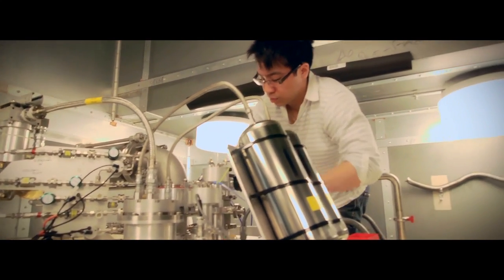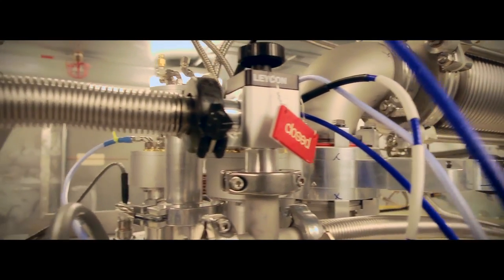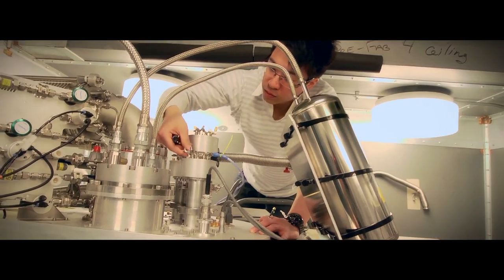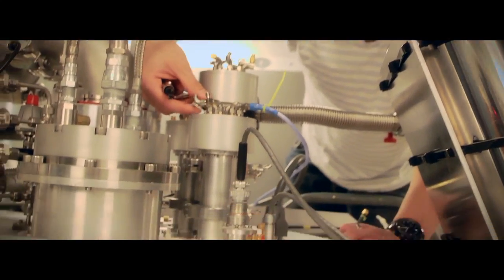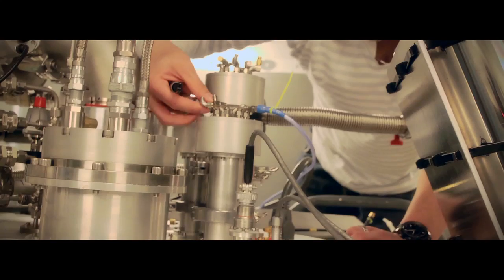The tool that we work these experiments in is a dilution refrigerator, and it gets down to 15 to 20 millikelvin. It gets that cold because we need to be able to keep the quantum states very pure, and we want to get them into their ground state before we do any of our experiments.